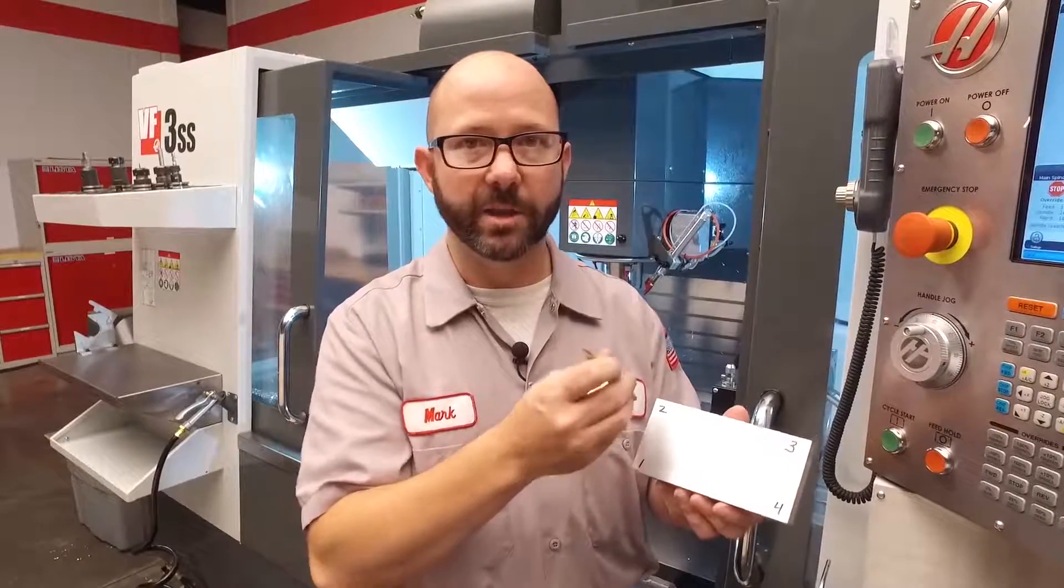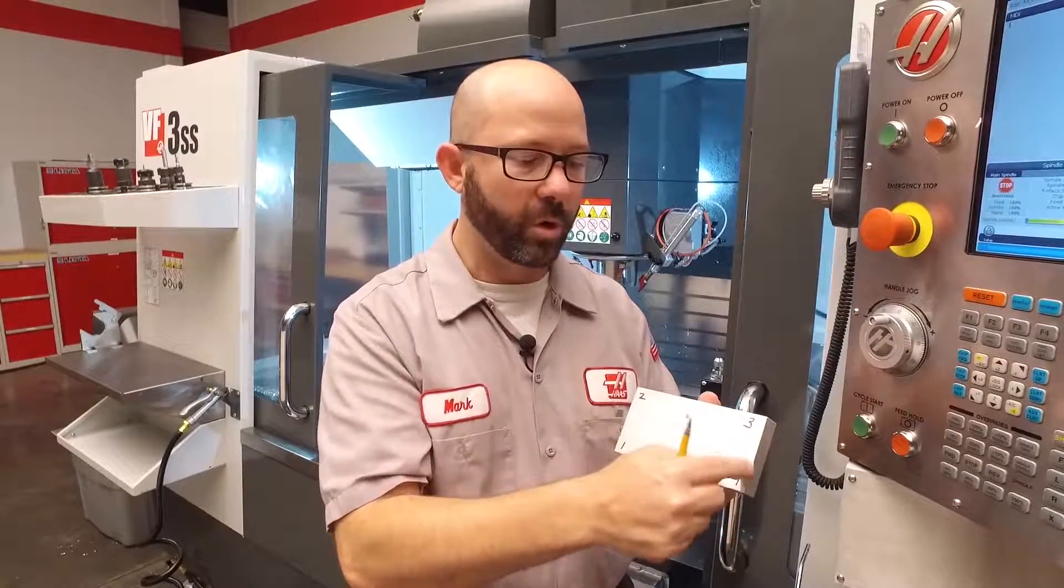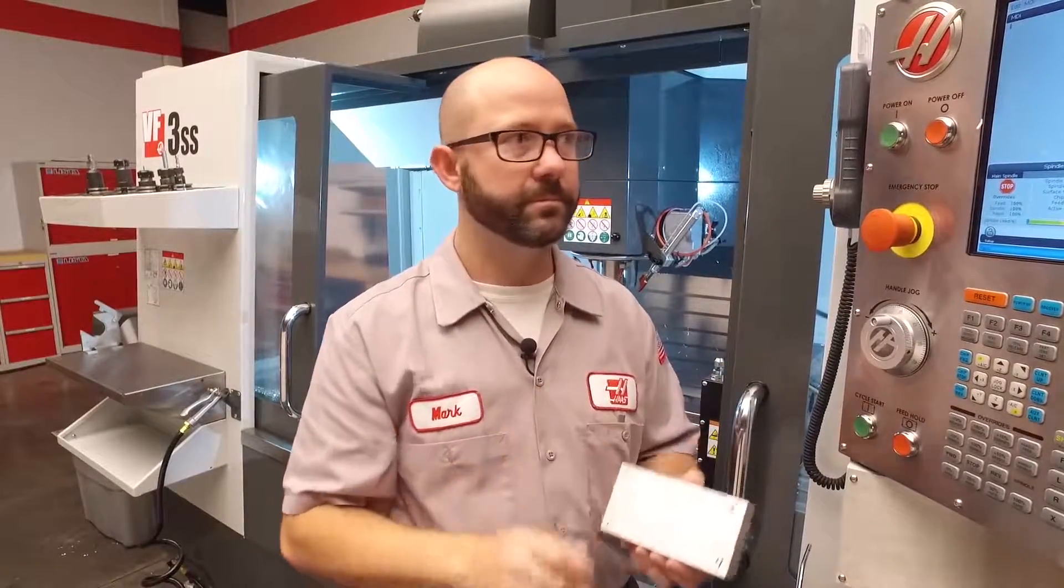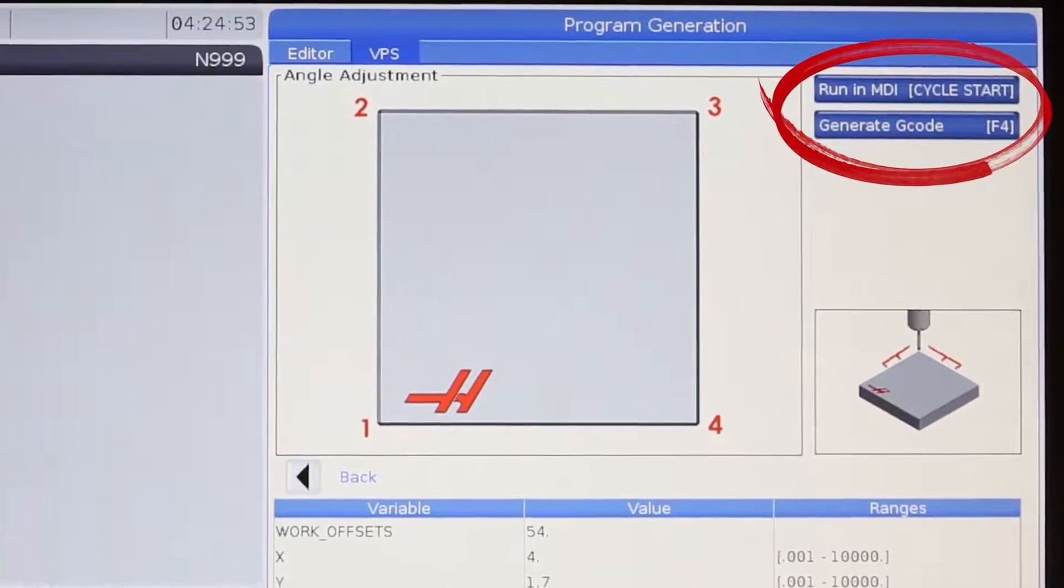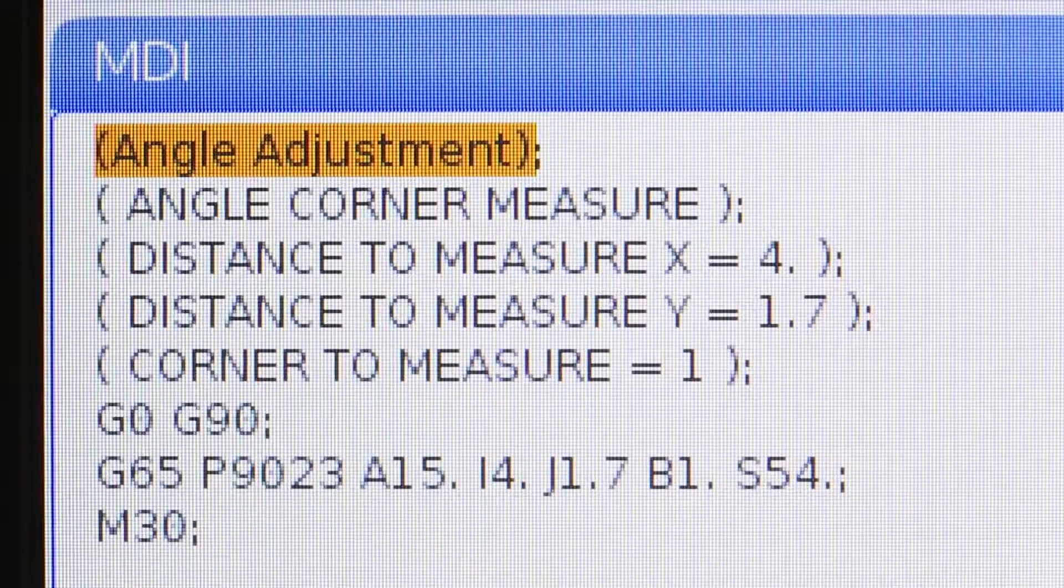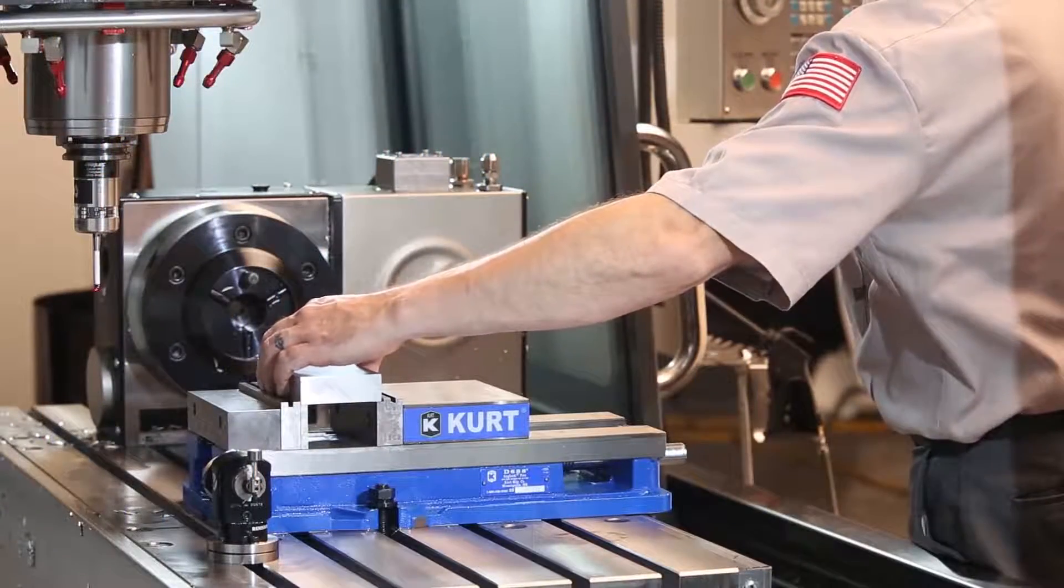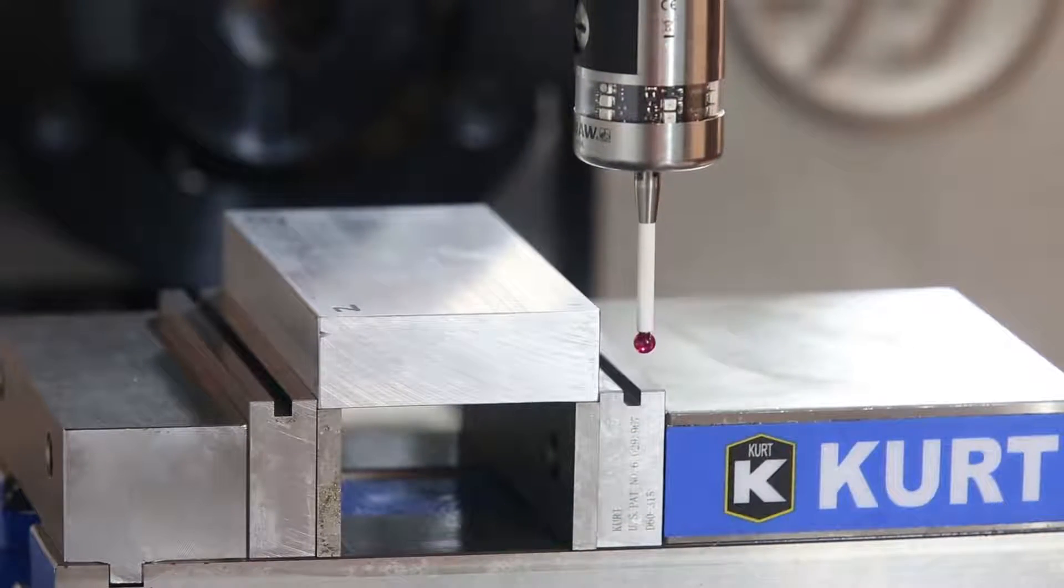When we enter those X and Y values, those are just lengths. You don't have to put in a plus or minus. The control figures all of that out based on what corner we've decided to start from. All we've got to do is follow the on-screen instructions and press F4 to generate the code. I'm gonna output this to MDI. I'm gonna go ahead and load up our part, handle jog that probe right in front of this front left corner and press cycle start.